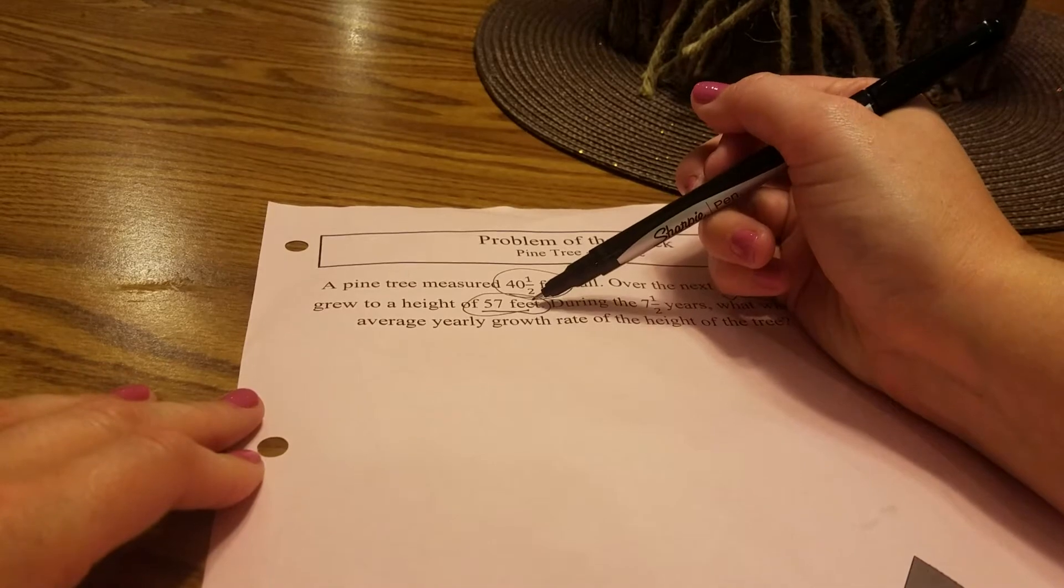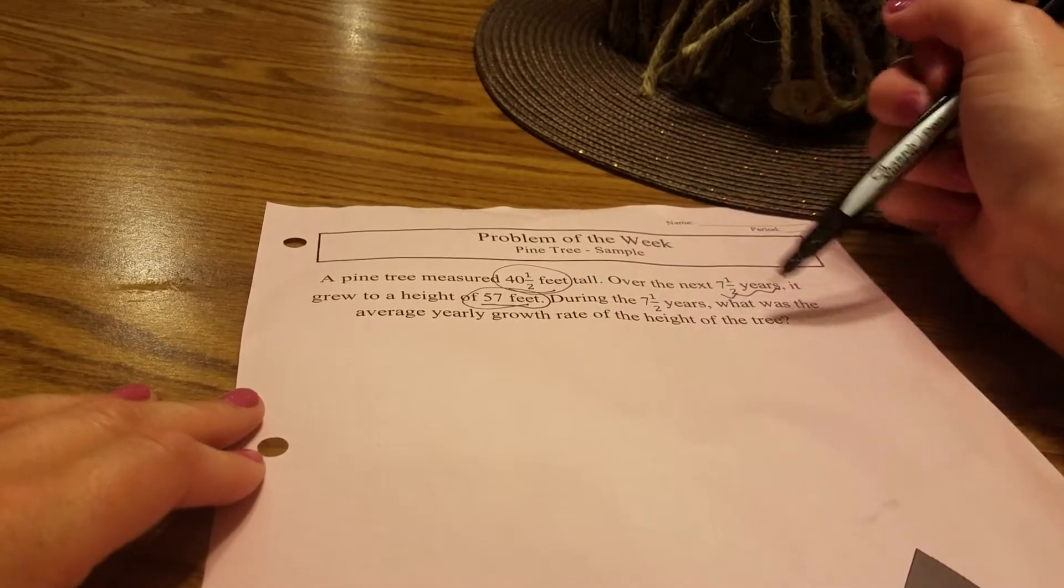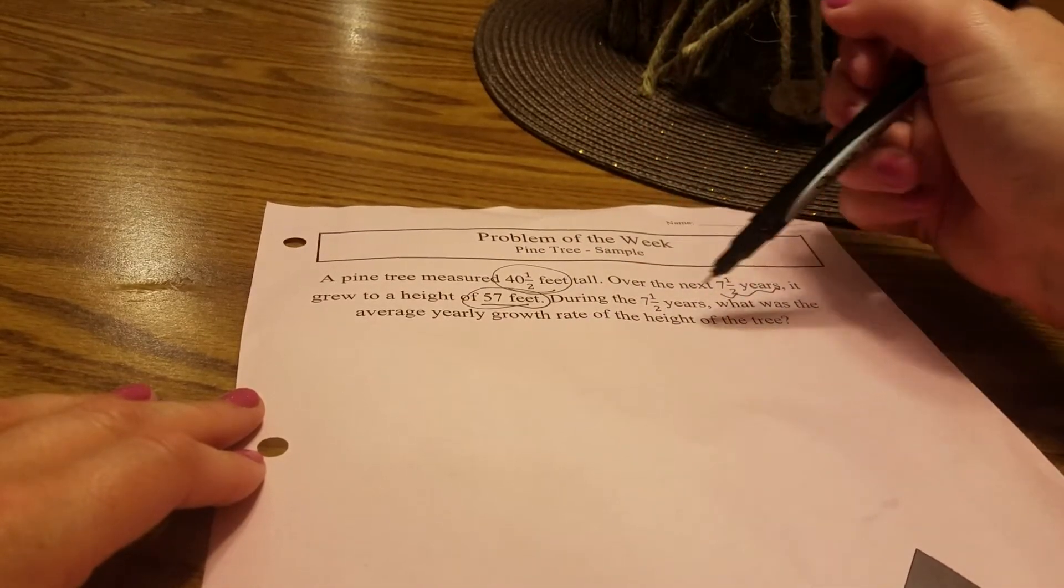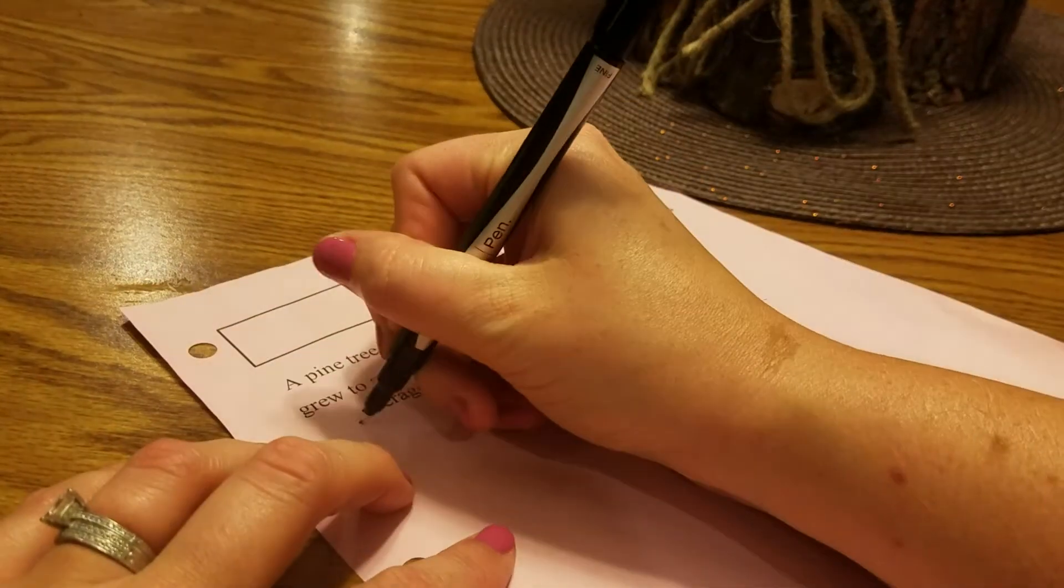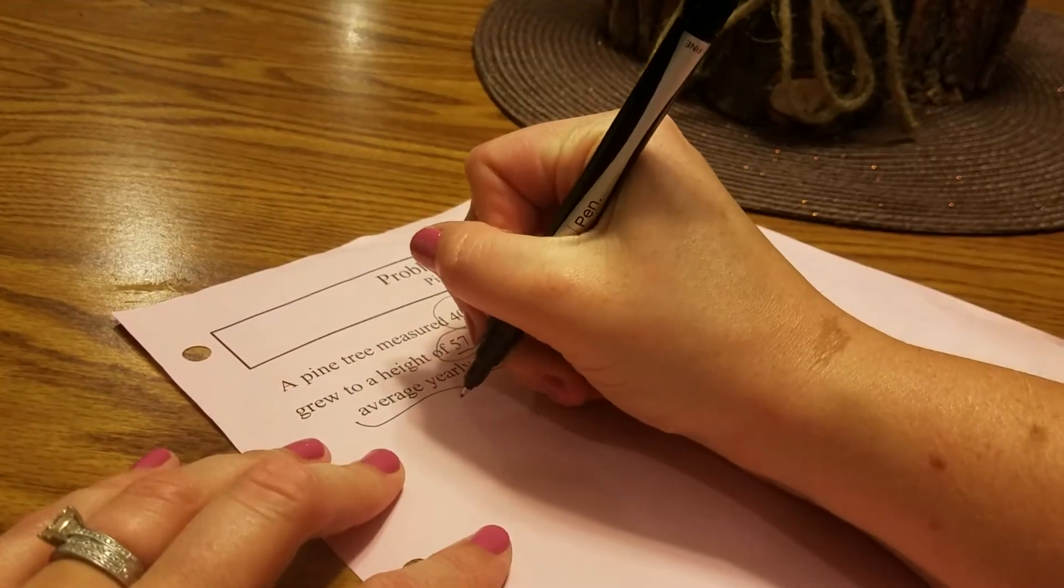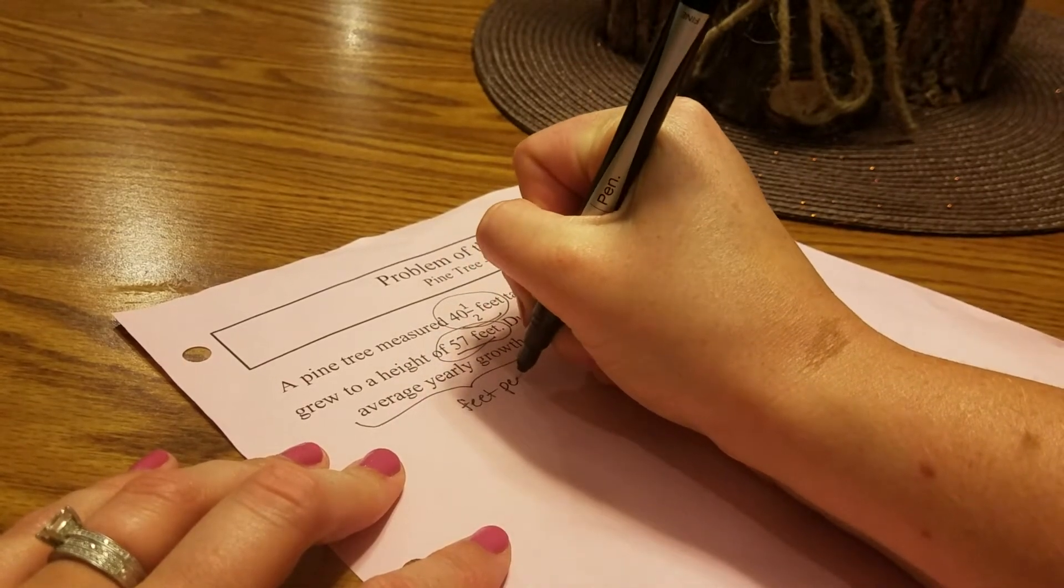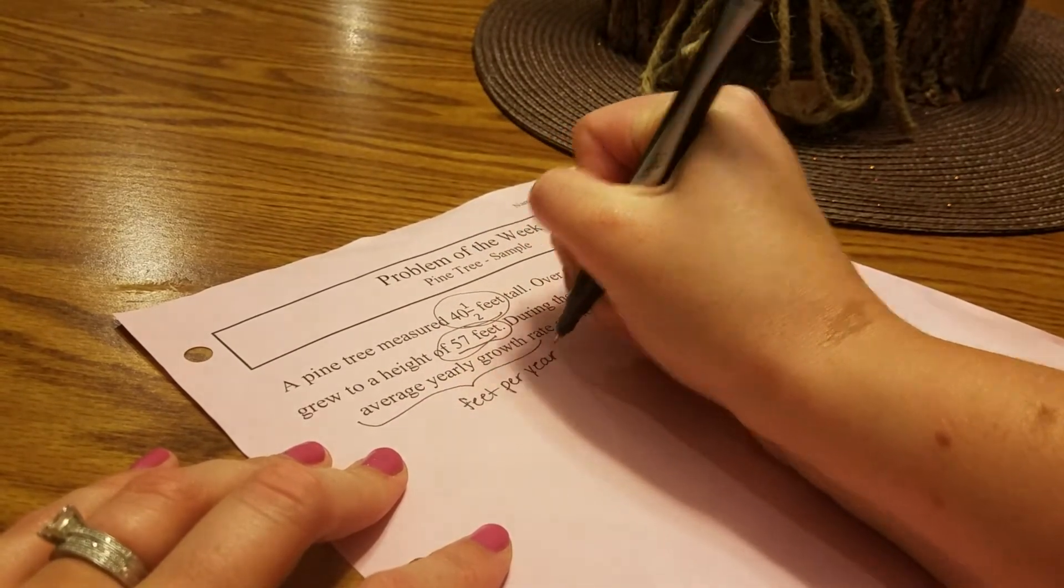So it started at 40 and a half, grew to 57. During the seven and a half years, what was the average yearly growth rate of the height of the tree? Average yearly growth rate - we're trying to figure out how much it grew in feet per year.